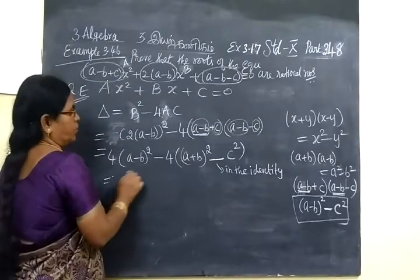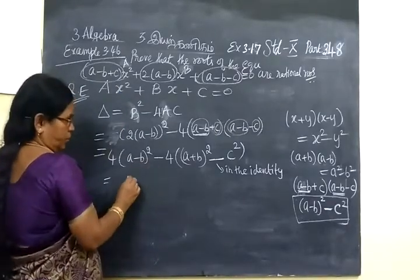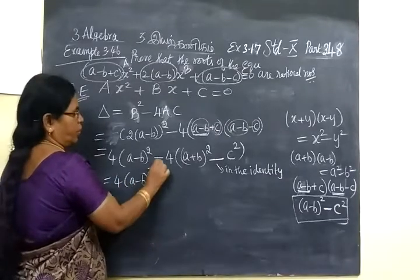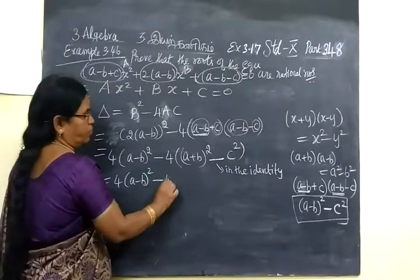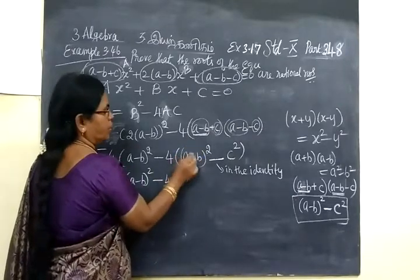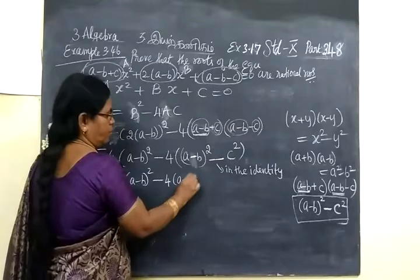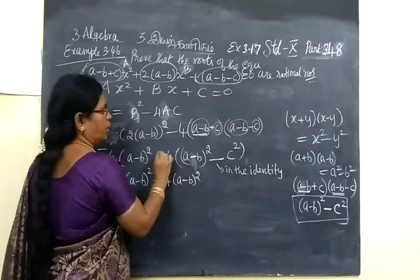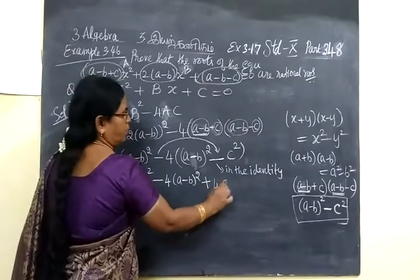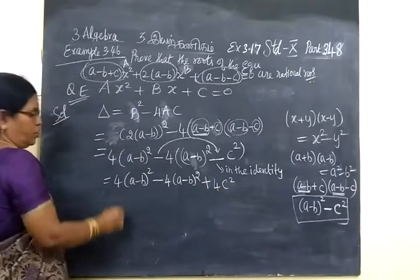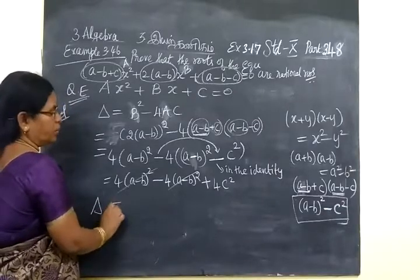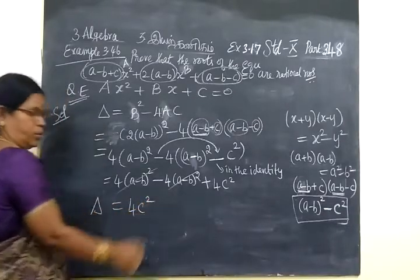So, equal to — you take 4 inside. So A minus B whole square, take 4 inside, minus 4 bracket A. Here minus, not plus. A minus B whole square, then minus into minus — plus, plus, plus — 4C square. So this and this cancel.